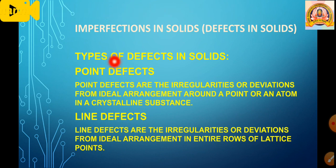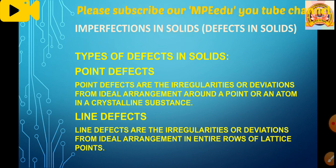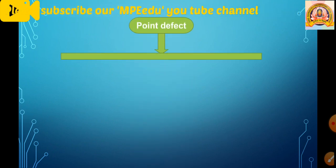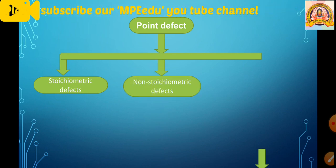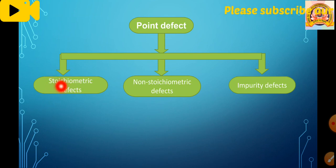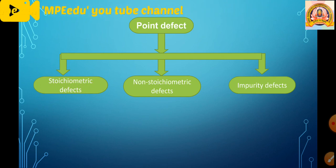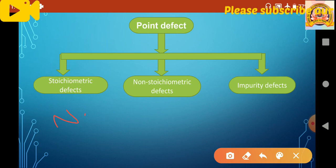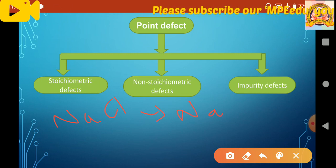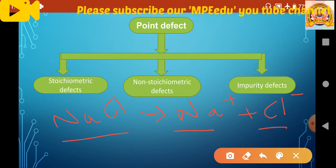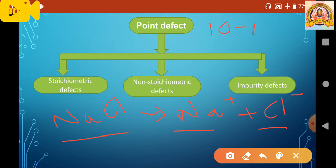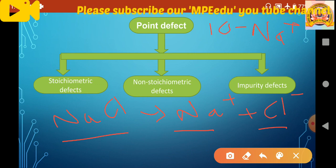The second type is line defects. Line defects are the irregularities observed through one entire row or one column. During the packing of the crystal, one entire row or column shows some deviation or missing of particles. Such defects are classified as line defects — irregularities from the ideal arrangement in an entire row or lattice. These defects occur due to changes in temperature, pressure, or any external energy during packing.